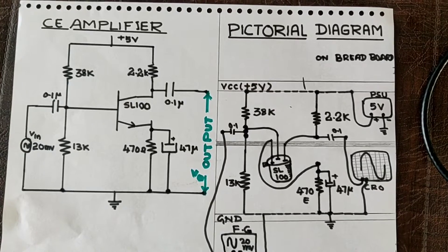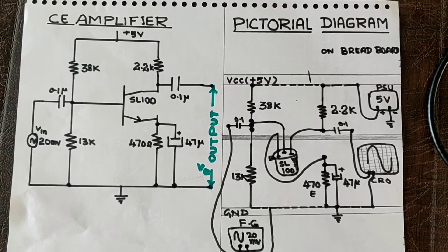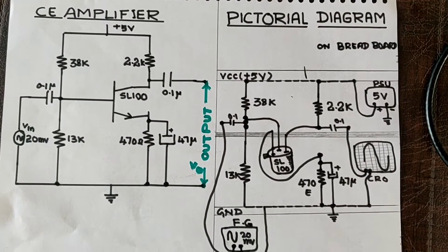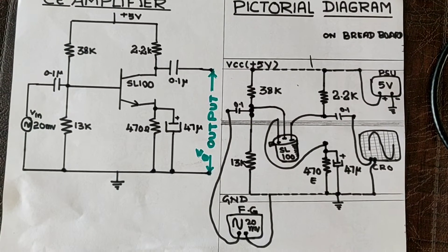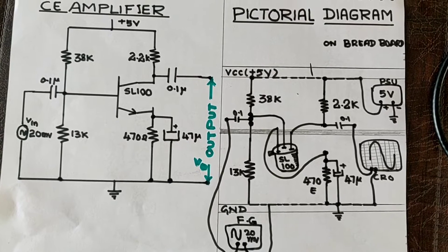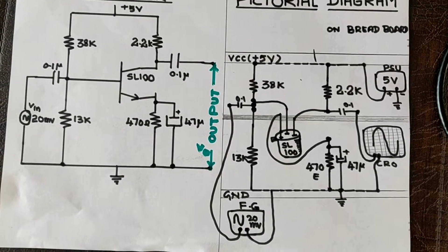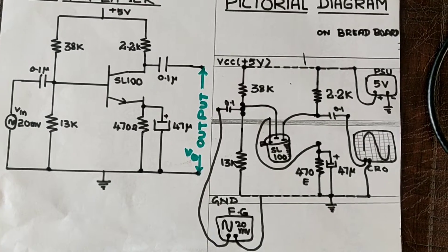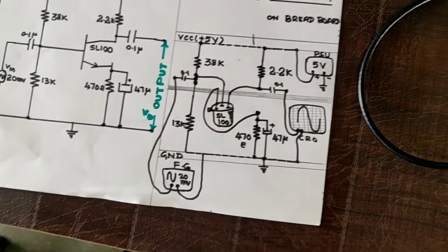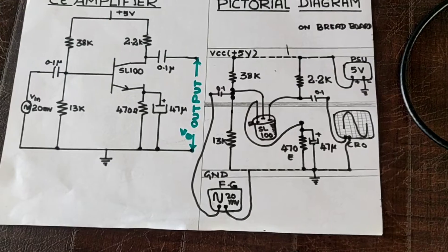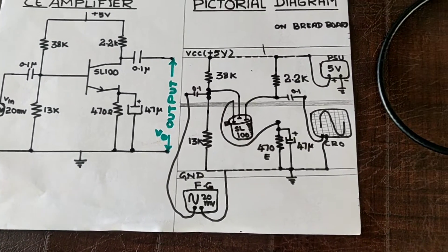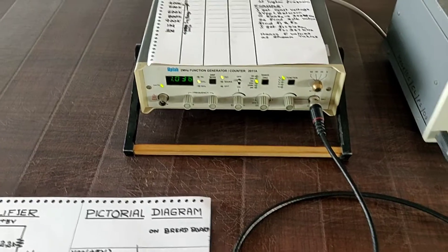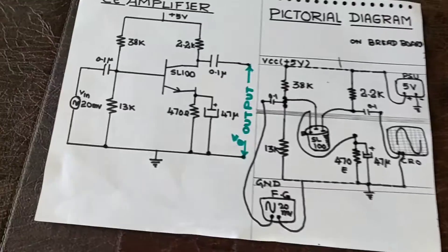Today I am going to demonstrate how to start the experiment of CE amplifier. I will observe this circuit diagram and a pictorial diagram which you are going to implement on a breadboard in a systematic way. Before starting the experiment, I already explained in part 1 that you should connect all instruments in a systematic manner as shown in the circuit diagram.